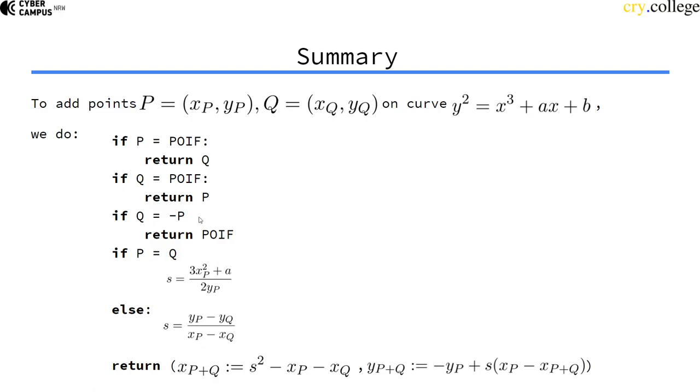Now we have to check if q is actually the inverse of p. And if so, the result is the point at infinity. Then we could check if p is actually q, if it's the same point.